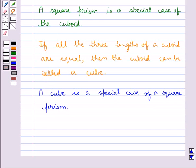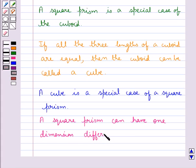And we notice one more thing that a square prism can have one dimension different from the other two, but a cube cannot.